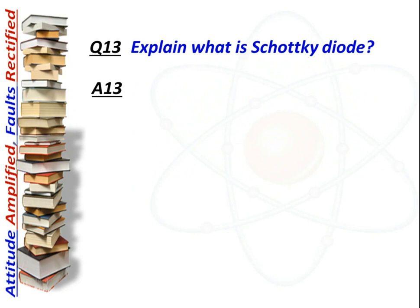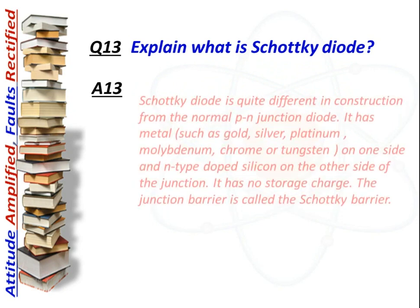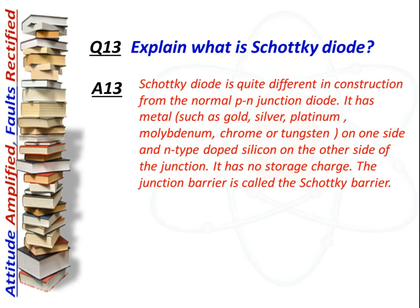Next question: What is a Schottky diode? Answer: A Schottky diode is quite different in construction from a normal PN junction diode. It has metal — such as gold, silver, platinum, molybdenum, chromium, or tungsten — on one side and n-type doped silicon on the other side of the junction. It has no storage charge, and the junction barrier is called the Schottky barrier.